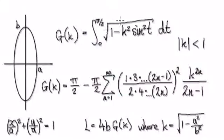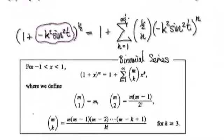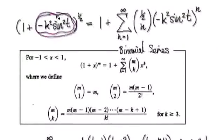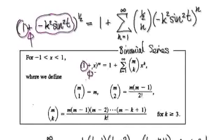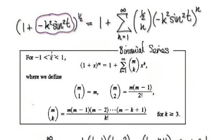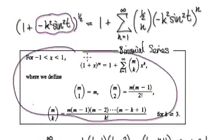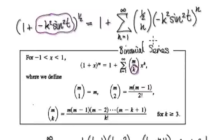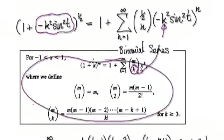Let's start by rewriting this — rewriting that as this. So here, this is your 1 plus your complicated term to the power of a half. I copied and pasted this from the internet, so their k would be different from our k.